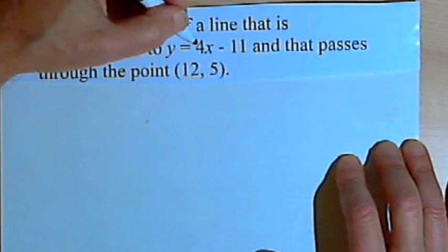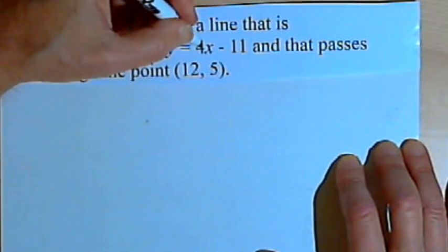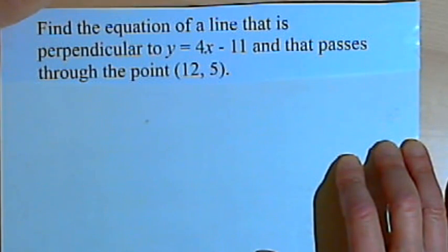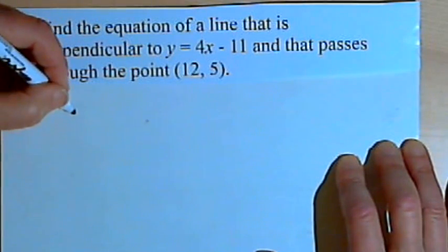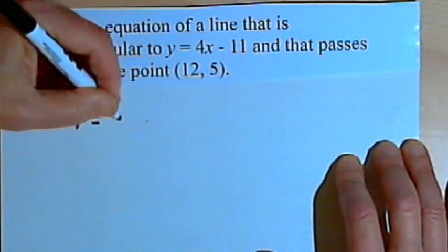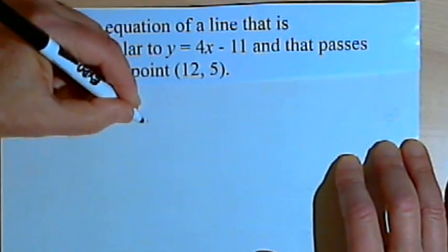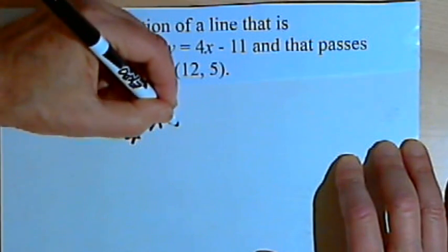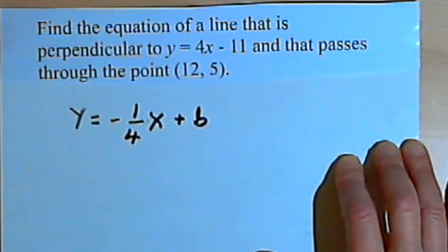Now I want to find the line perpendicular to that, so its slope is going to be the negative reciprocal of 4. The reciprocal of 4 is 1 over 4, so the negative reciprocal is negative 1 over 4. Now I can start writing my equation: y equals negative 1 over 4 times x plus b.